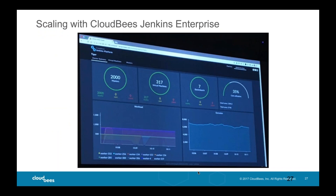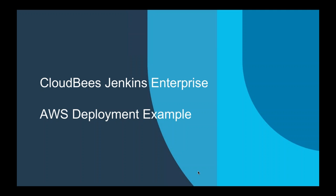This is a slide from our conference last year, Jenkins World, where they did a live demonstration of CJE on AWS showing that it spun up 2,000 masters and about 8,000 concurrent agents. That should be sufficient for most organizations — and that wasn't a technical limit that was reached, it was just felt to be an appropriate cutoff point.